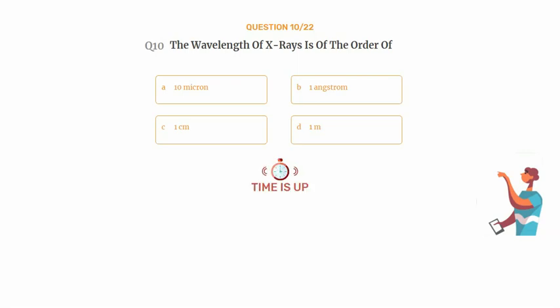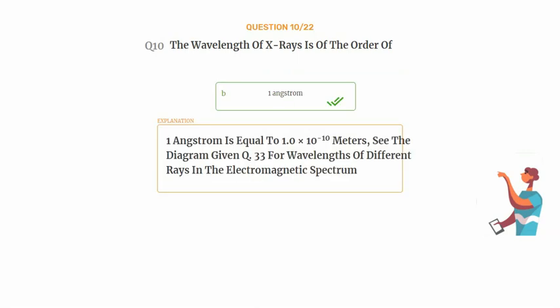The correct answer is Option B: 1 angstrom. 1 angstrom is equal to 1.0 times 10⁻¹⁰ meters. See the diagram given Q.33 for wavelengths of different rays in the electromagnetic spectrum.